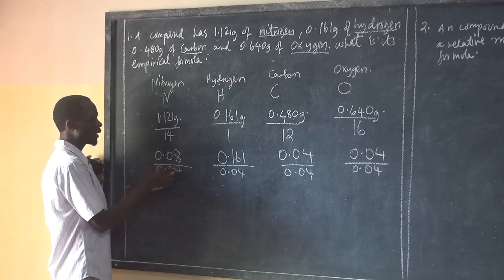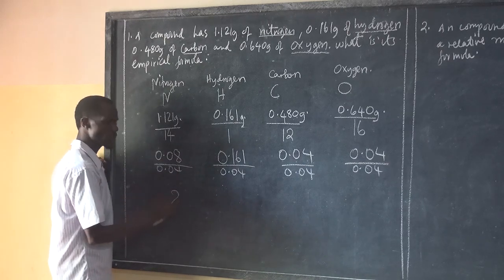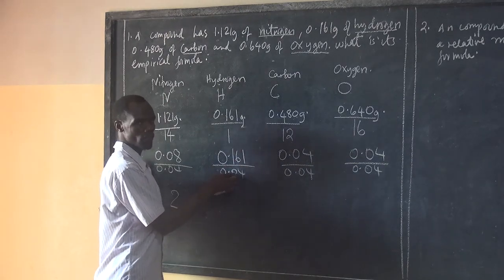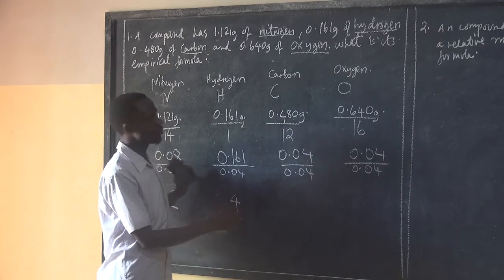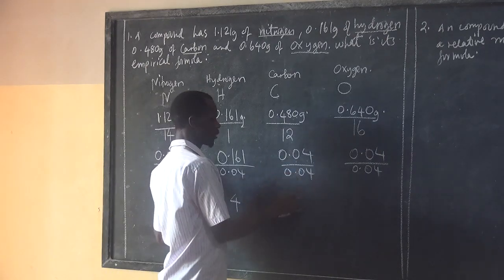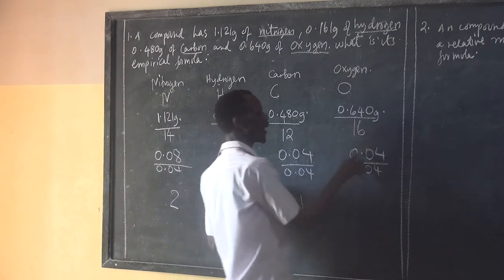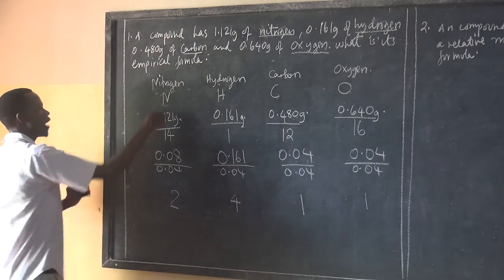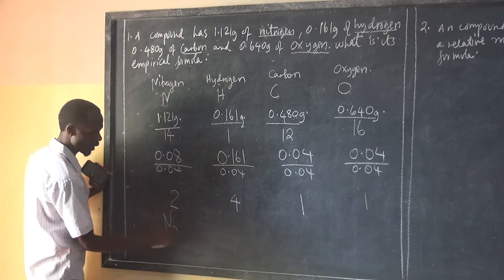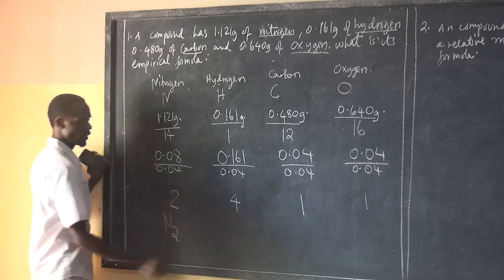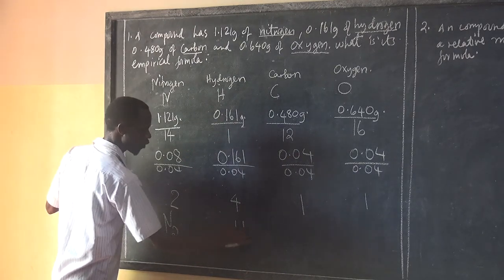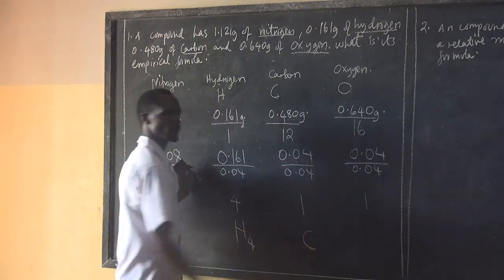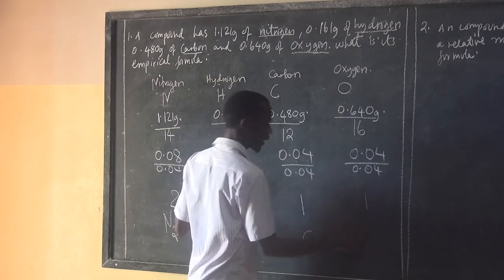If you take this divided by 0.04, you get 2. If you take this divided by 0.04, you get 4. If you take this divided by 0.04, you get 1. And if you take this divided by 0.04, you get 1. Mathematically, we have nitrogen — there are two of them. Then we have hydrogen — there are four of them. Then we have carbon — one of them. And then we have oxygen — one.